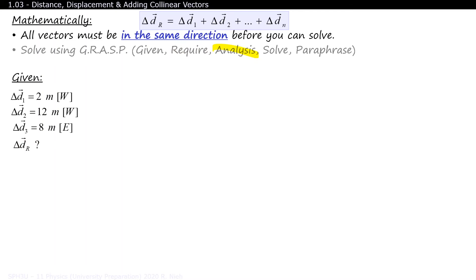A is for analysis. In other words, what formula is needed to solve the problem? Since there are three givens, we stop the formula at delta D3. S is for solve, so we substitute the values into the formula and solve the problem.